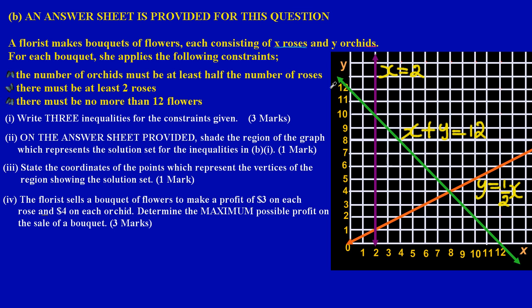Let's get into it. The question states: a florist makes bouquets of flowers each consisting of x roses and y orchids. For each bouquet she applies the following constraints. A very important thing to note as we go through this question is that x represents the roses and y represents the orchids.